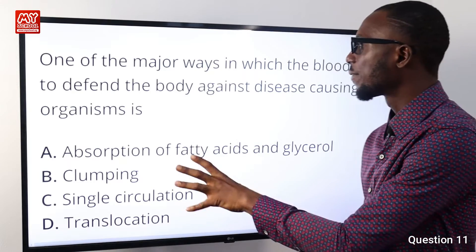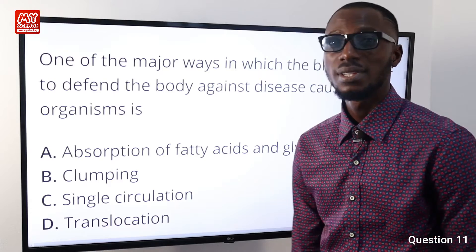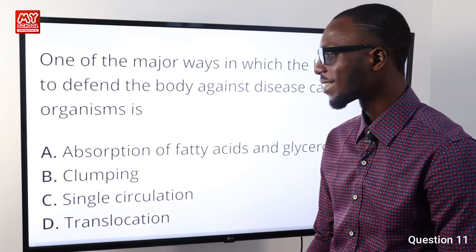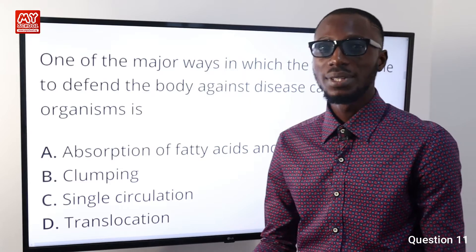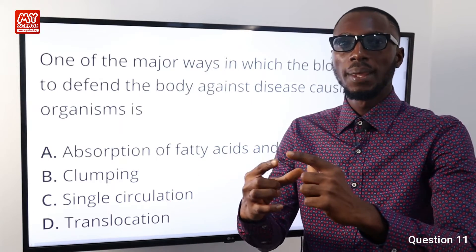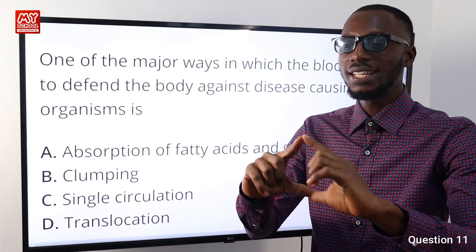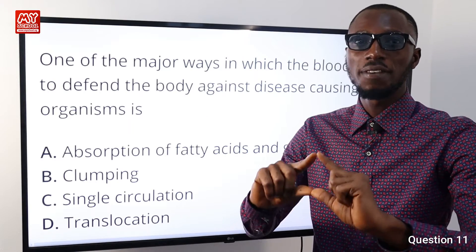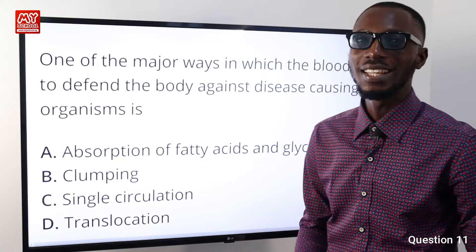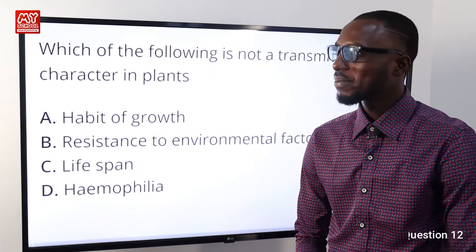Question number eleven: one of the major ways in which blood is able to defend the body against disease-causing organisms is called what? It is referred to as agglutination — this is how it happens: the blood sticks pathogens together to form clumps, and this clump will be engulfed by the phagocytes present. So option B is correct.